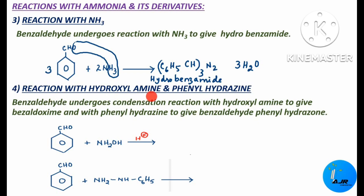The next reaction is the reaction with hydroxylamine and phenylhydrazine. When benzaldehyde undergoes condensation reaction with hydroxylamine, it gives benzaldoxime. And with phenylhydrazine, benzaldehyde gives benzaldehyde phenylhydrazone. Let us first see what happens with hydroxylamine — benzaldehyde reacts with hydroxylamine to form benzaldoxime.